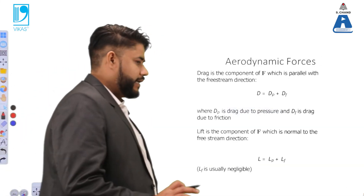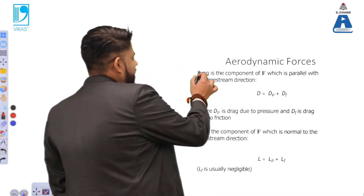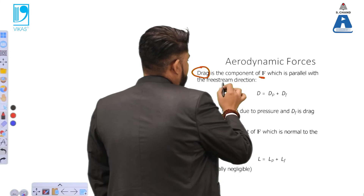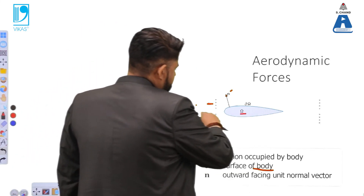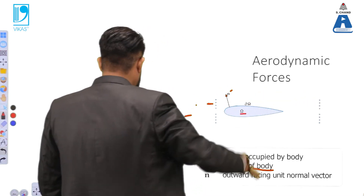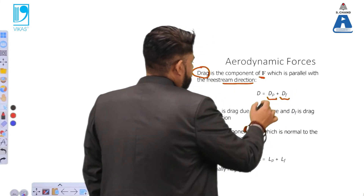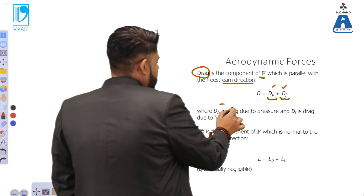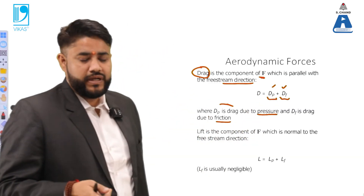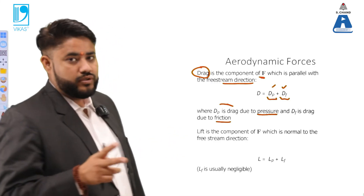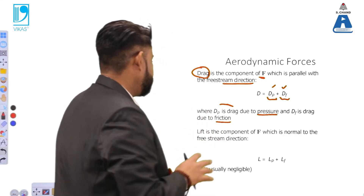Drag is the component of force parallel to the free stream direction. It is the sum of two components: D_P, which is drag due to pressure, and D_F, which is drag due to friction. The total drag is the summation of these two drag values.